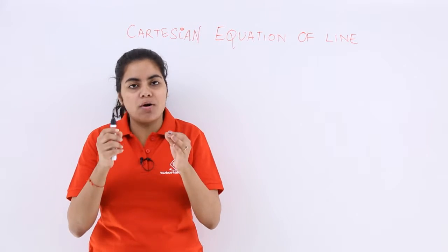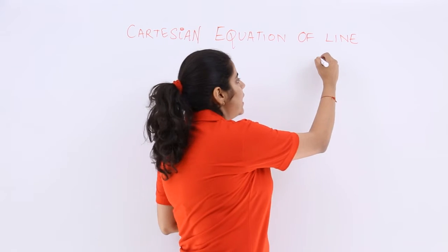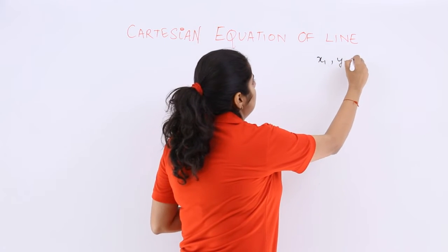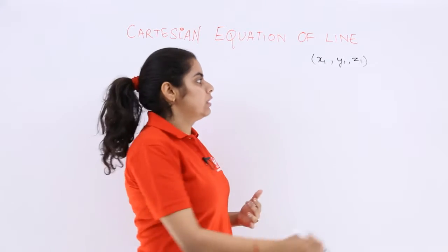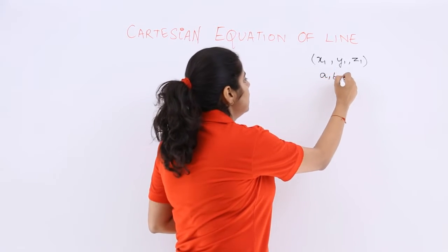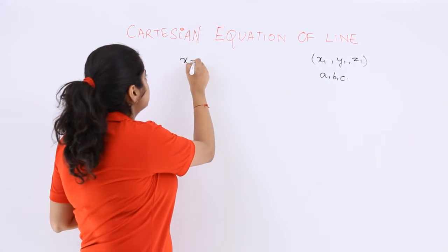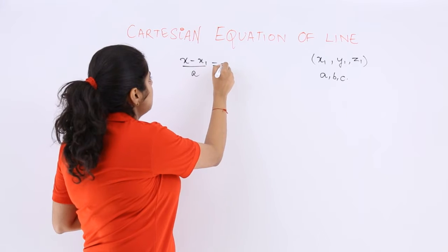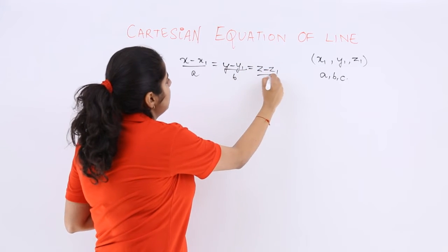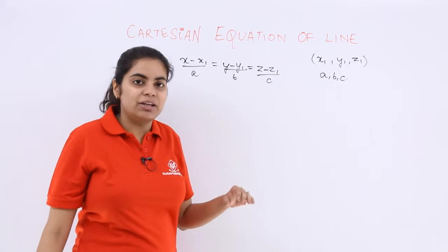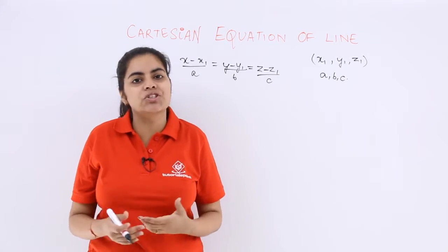Cartesian equation of any line which is passing through the point (x1, y1, z1) and direction ratios being proportional to A, B, and C is given by the formula: (x-x1)/A = (y-y1)/B = (z-z1)/C. This is the prescribed formula to find the Cartesian equation of a line.